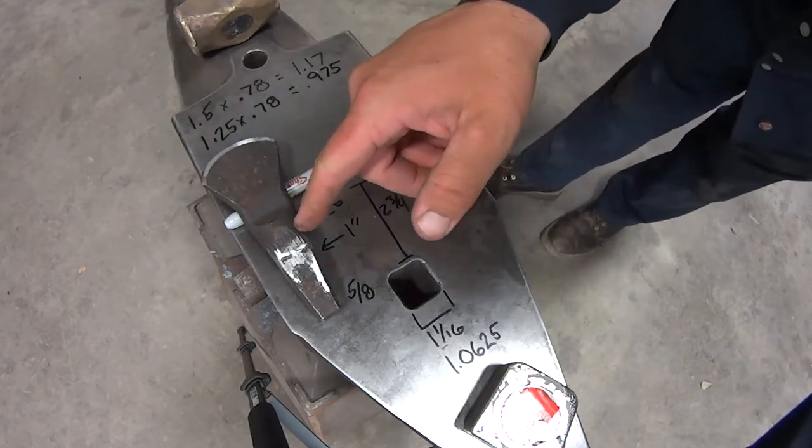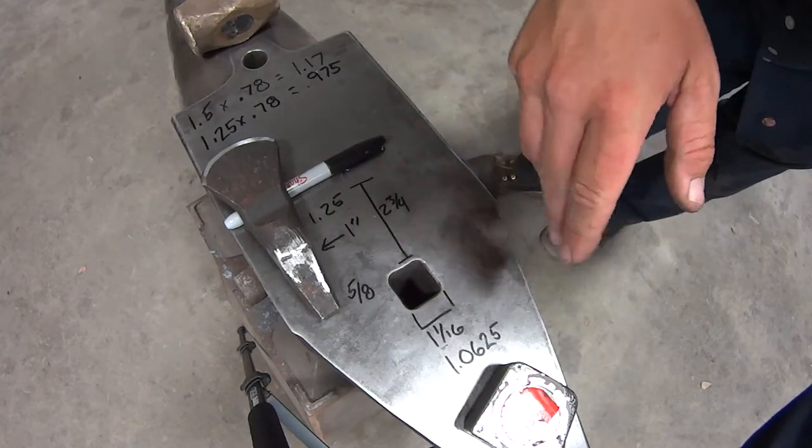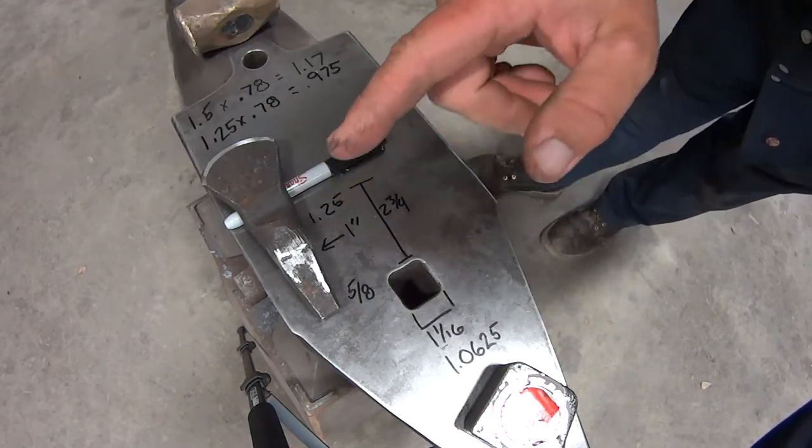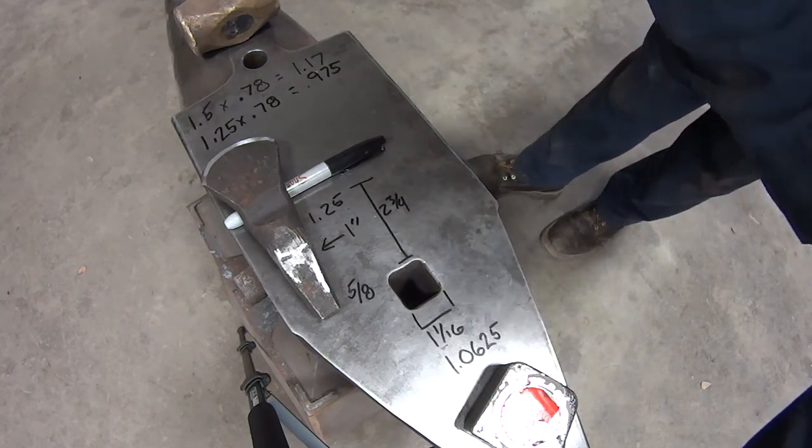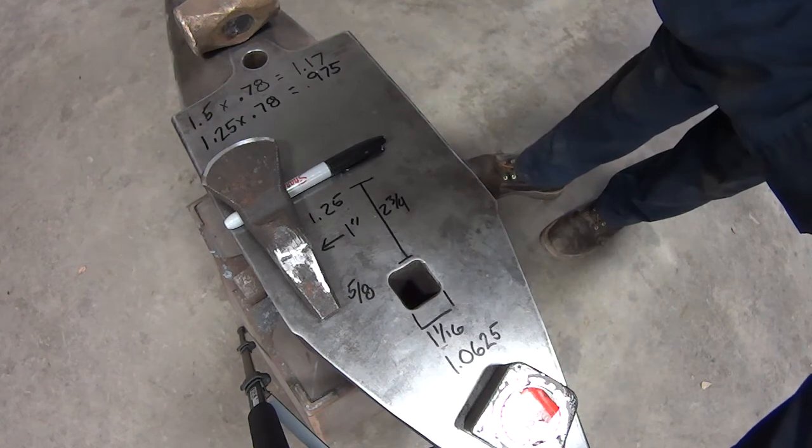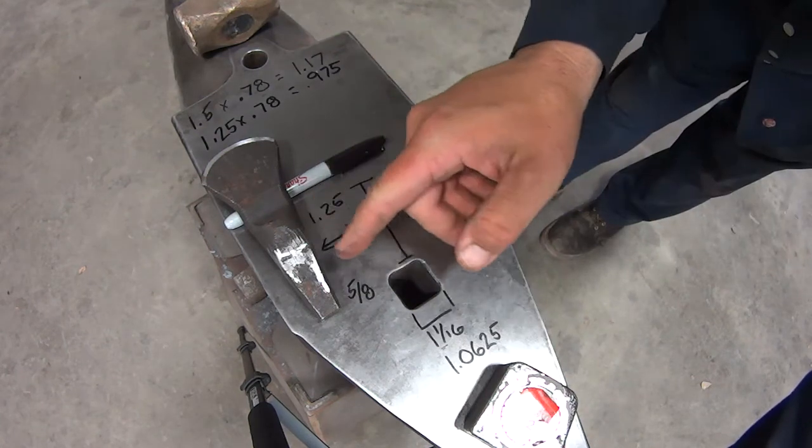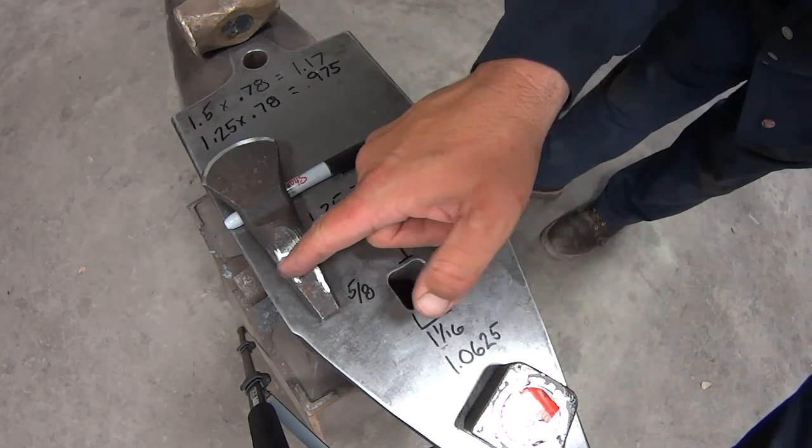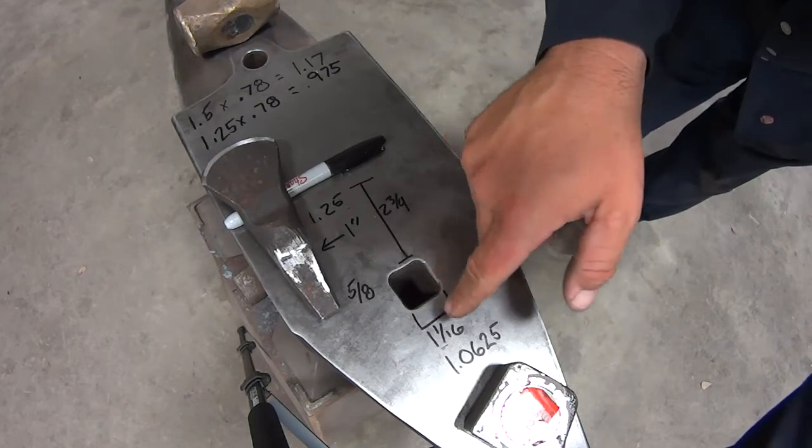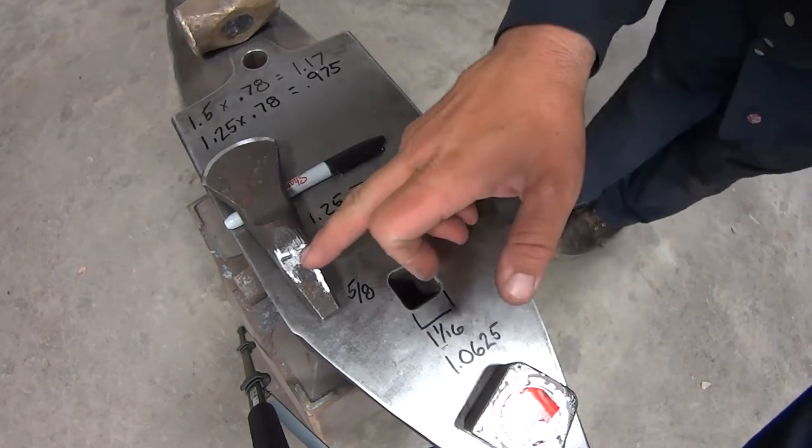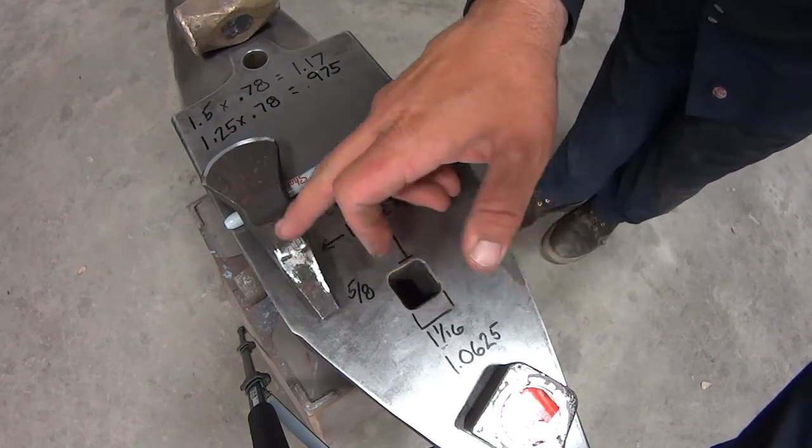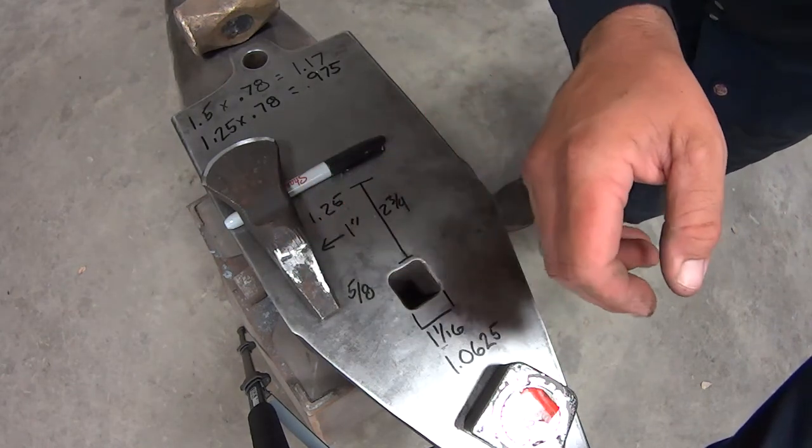This was originally made for a Trenton anvil, which I still have. It has about a 15 sixteenths hardy, so this fits very nice right along here. This Nimba has an inch and a sixteenth hardy, which doesn't seem like a lot of difference, but it actually makes a substantial difference as to where this locks in to the hardy.